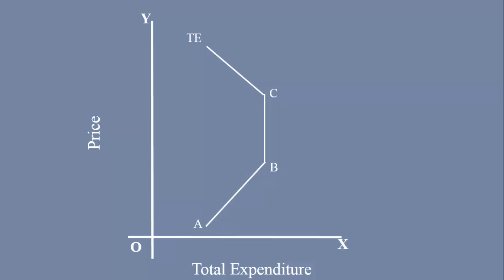The BC segment is vertical and parallel to Y axis. Let us see what happens in this segment. The price is P4, at this price the total expenditure is Y. The price falls to P3. The total expenditure remains unchanged at Y.